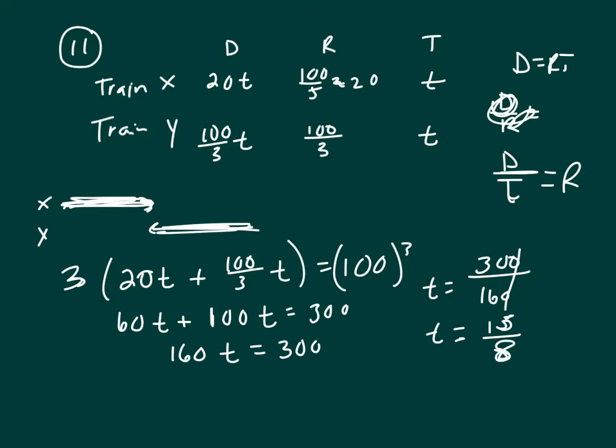We want to figure out how many miles had train X traveled. He traveled 20T, or 20 times 15 over 8. 4 will go into 20 5 times, 4 going into 8 2 times.